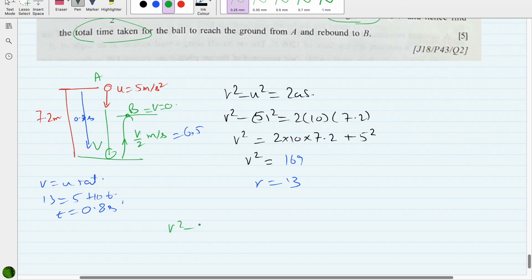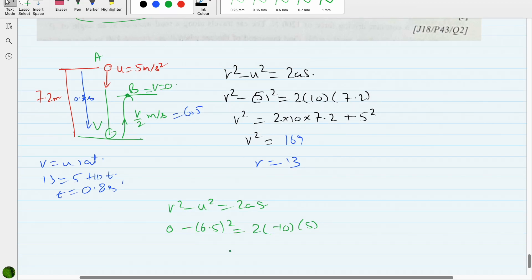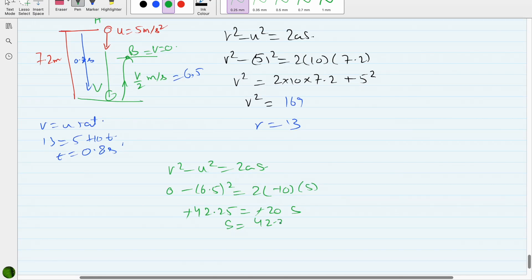So v² - u² = 2as. Final velocity is 0, initial in this case is 6.5, so 0 - 6.5² = 2 × (-10) × s. It is going against gravity, so we can find the maximum height. 6.5² is 42.25 = -20s. Negative goes away. Displacement is 42.25/20, and we get 2.125 meters.